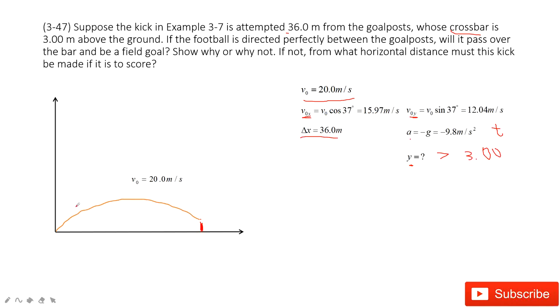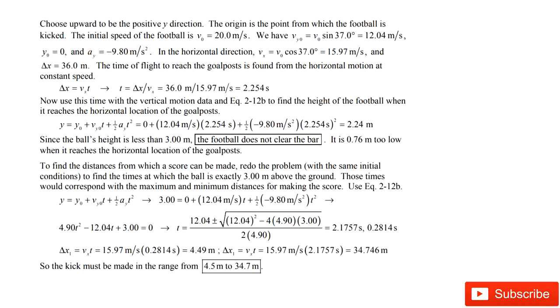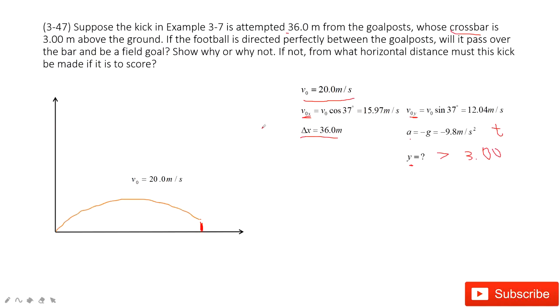Because at x component, it is moving, the velocity is constant. So in this one, we first can get the time t from x component. And then we input this time t inside, we can get the position at this bar position y. And then we do the calculation. We find this y is not larger than 3 meters. So the football cannot pass the bar.